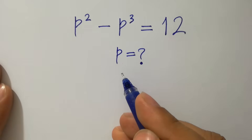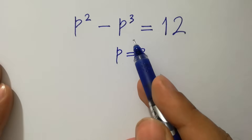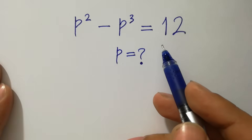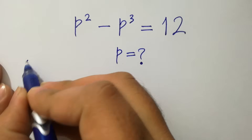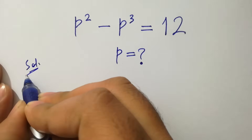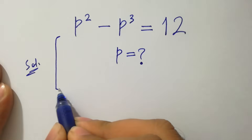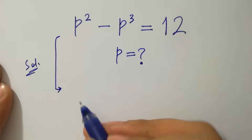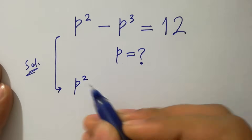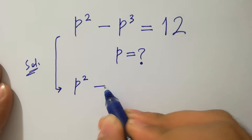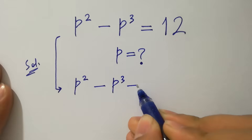Hello friends, find the value of p if p squared minus p cubed equals 12. This problem can be written as p squared minus p cubed minus 12 equals zero.